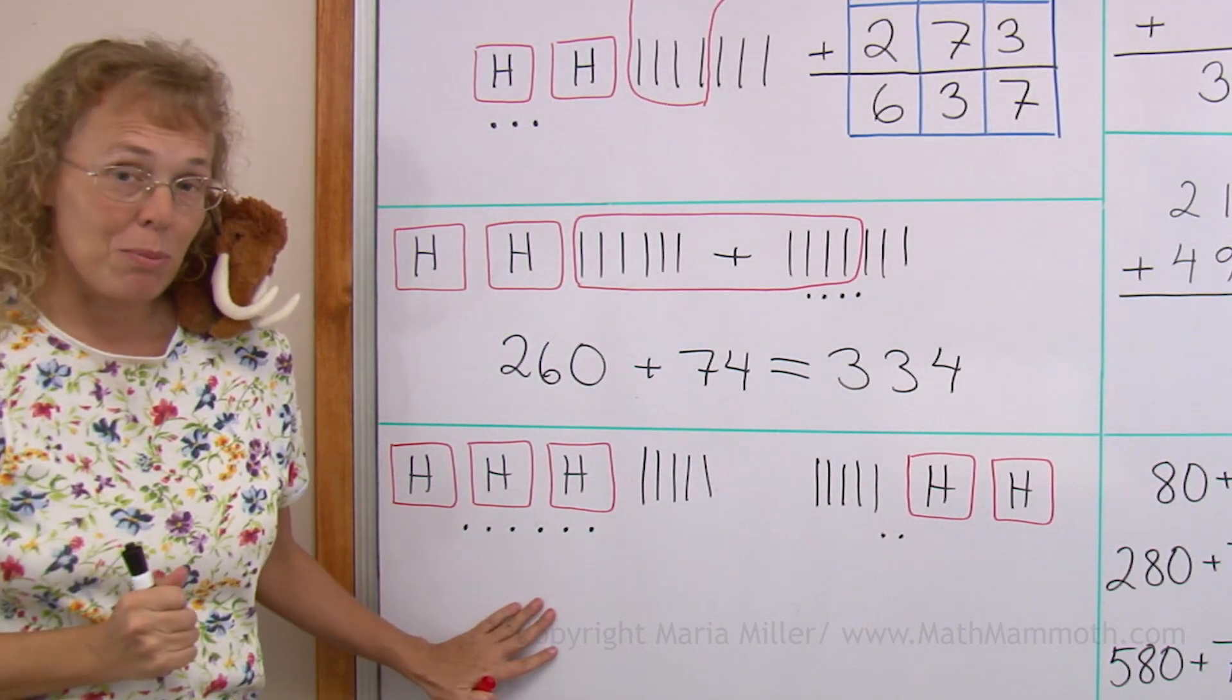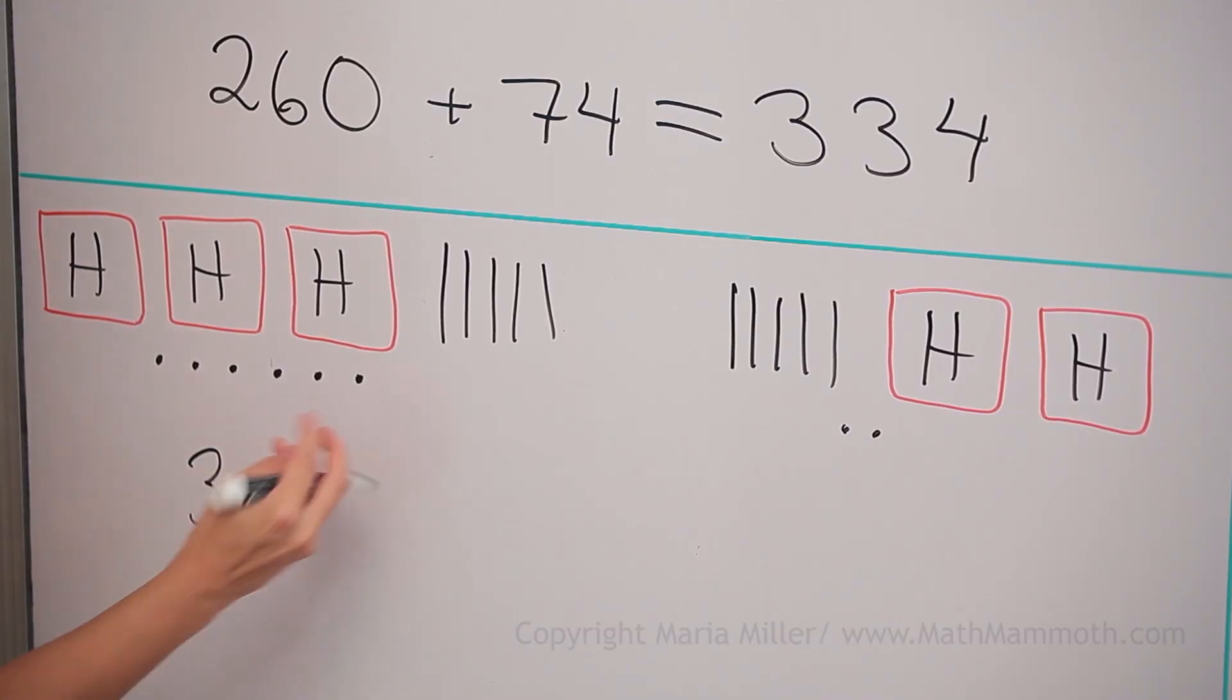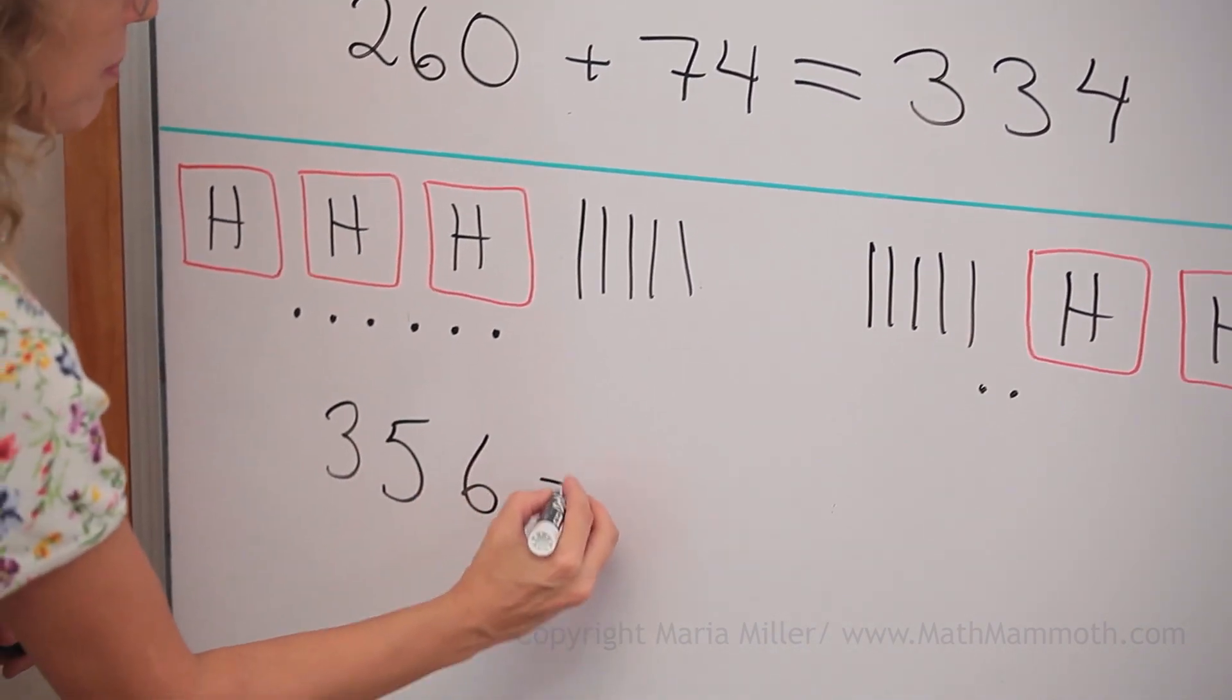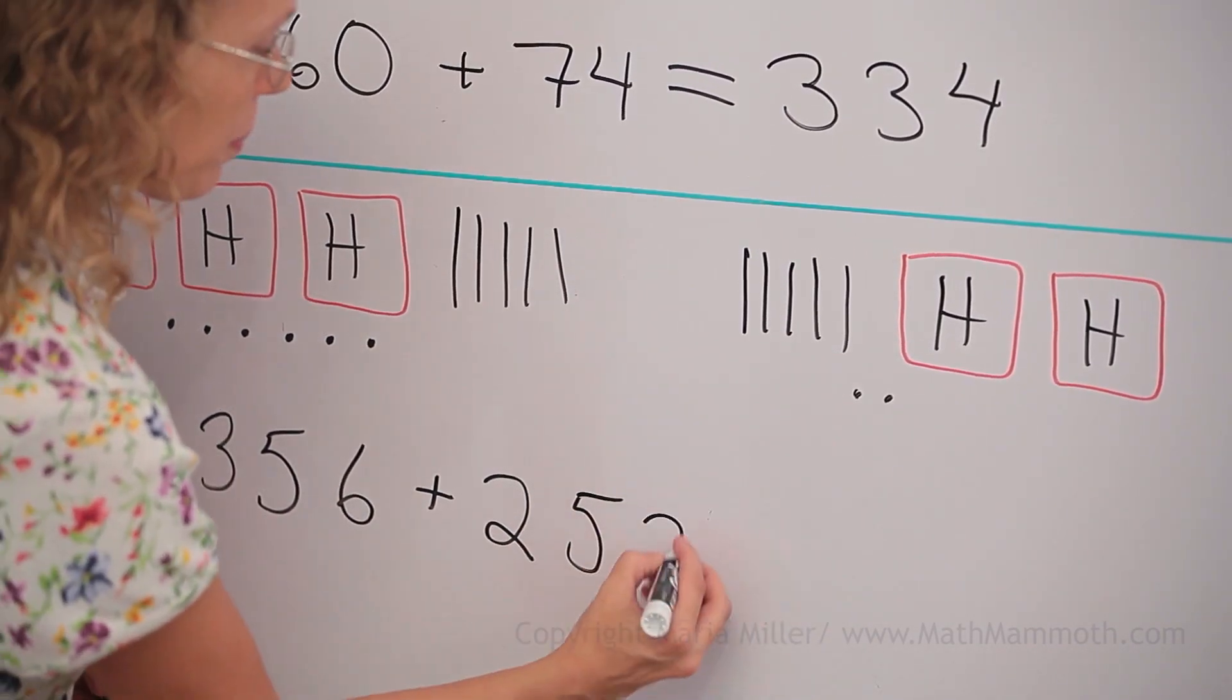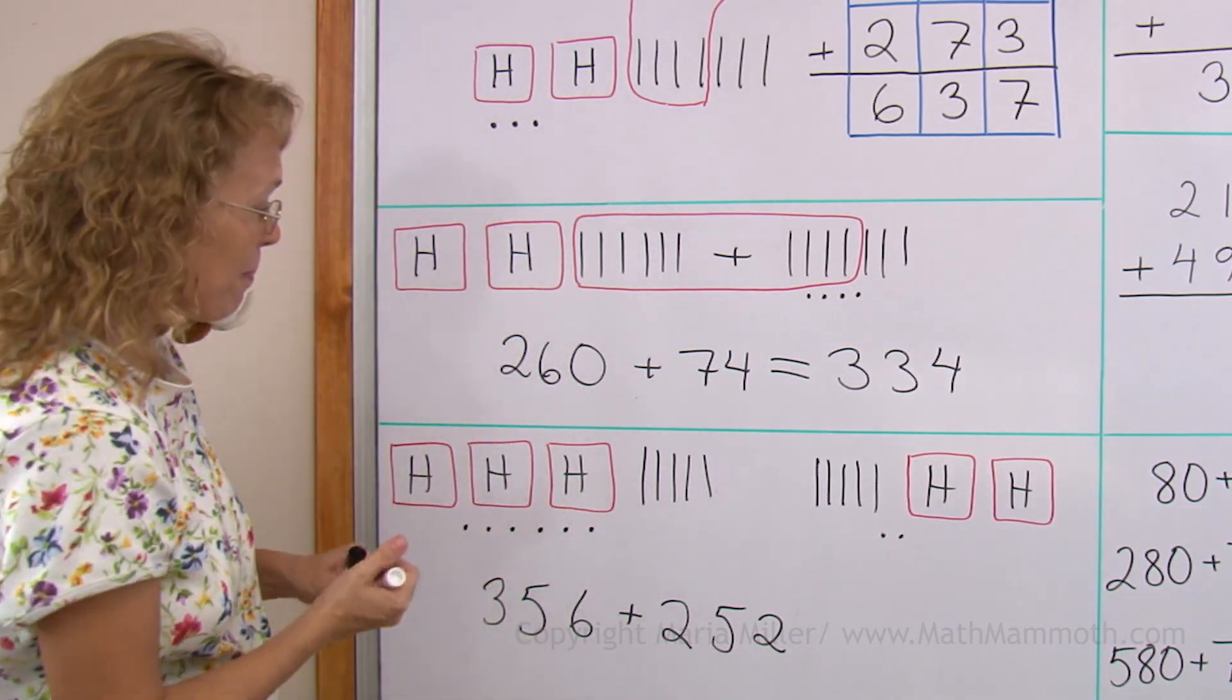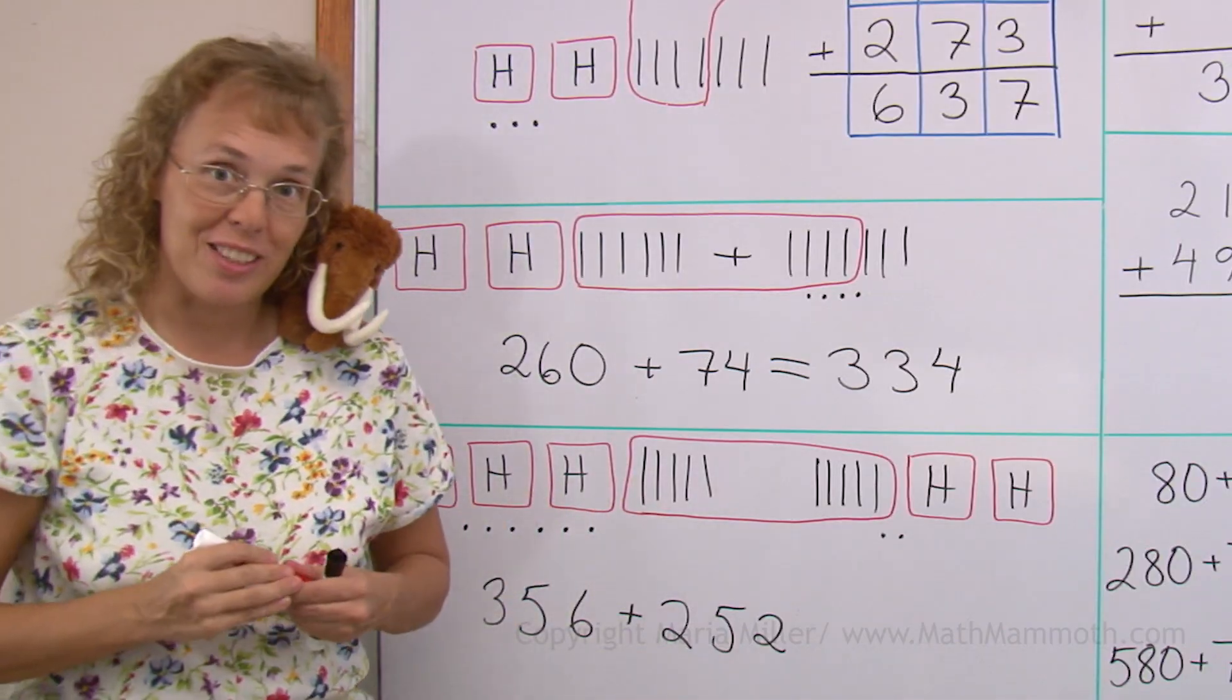And now let's do this problem first with the picture, with the visual model. I have three hundred and five tens and six, and over here two hundred, five tens and two. What happens with the tens? Can you see? Five tens, five tens makes exactly ten tens.